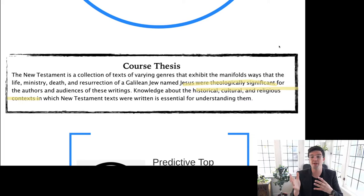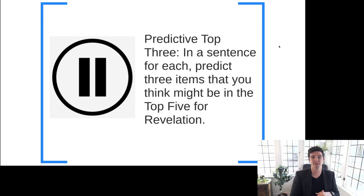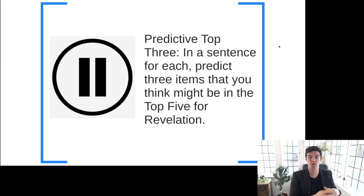We're going to start the video with a predictive top three. The lecture pause is for you to guess the three most important things about Revelation that are going to be on here. Whether or not your guesses are right is no matter — the fact of making predictions helps us get information out there to which we can add more. When we have ideas out there and can add information onto them, we learn better. So go ahead and pause the lecture here and, in about a sentence for each, predict three things you think might be on the top five.